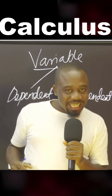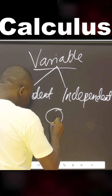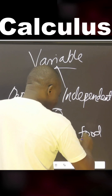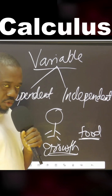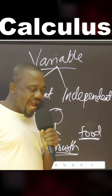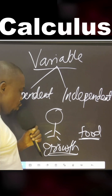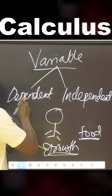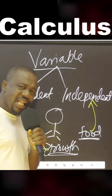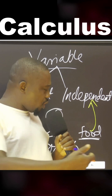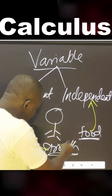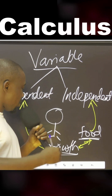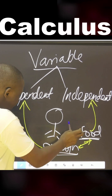One is dependent, the other is independent. For instance, you are a person and you need to grow — what do you need to grow? You need food. Now let's classify: food and growth. Which one is dependent and which is independent? For you to grow, you need food — growth depends on food. So growth is the dependent variable, while food is the independent variable, because food does not depend on growth, but growth depends on food.